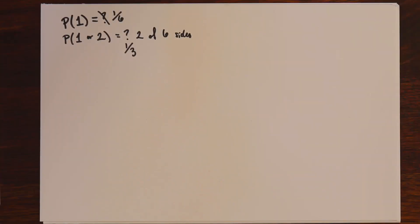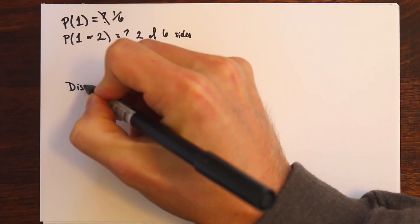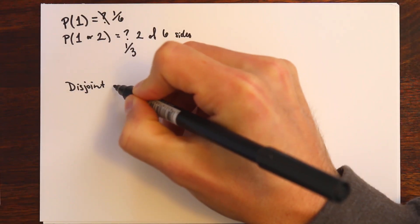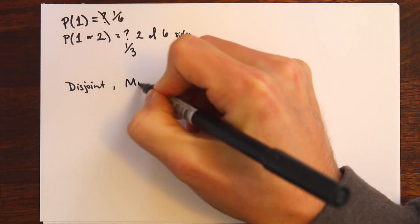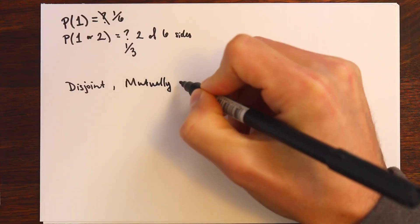As we go through this video for an introduction to probability, we're going to go over some of the basic principles. The first of these principles is disjoint, also called mutually exclusive events.